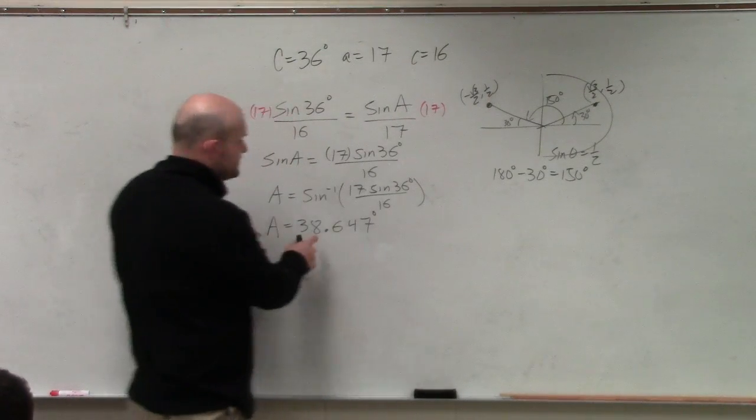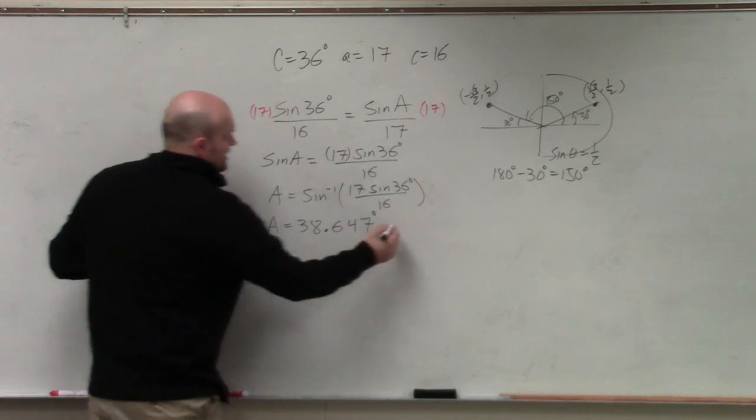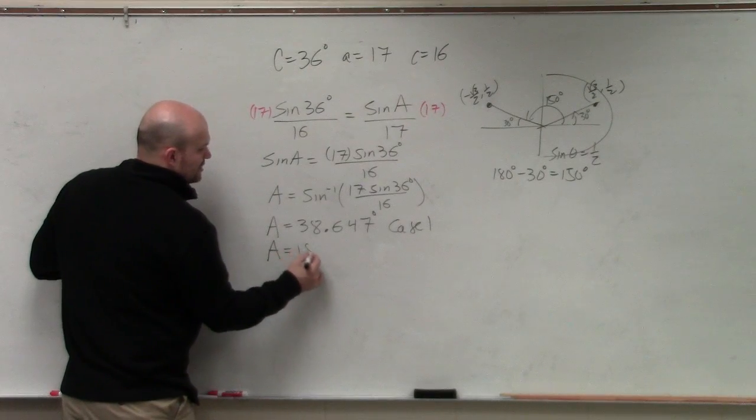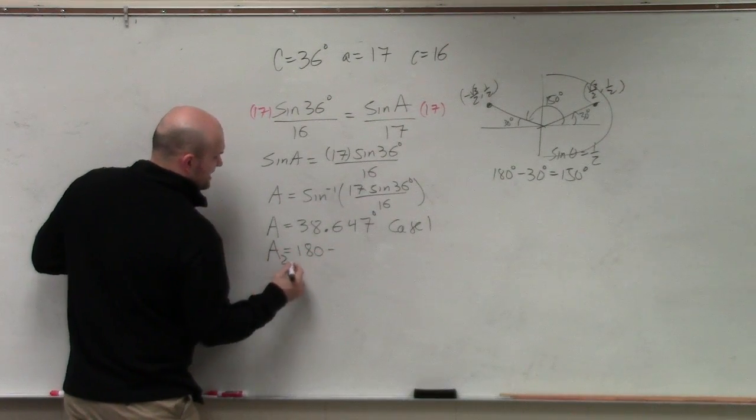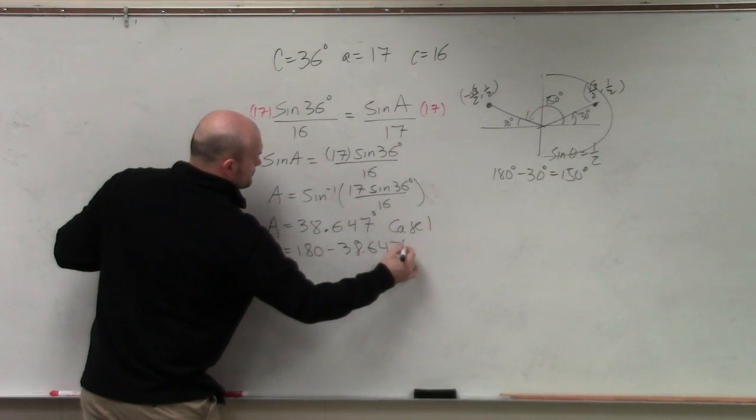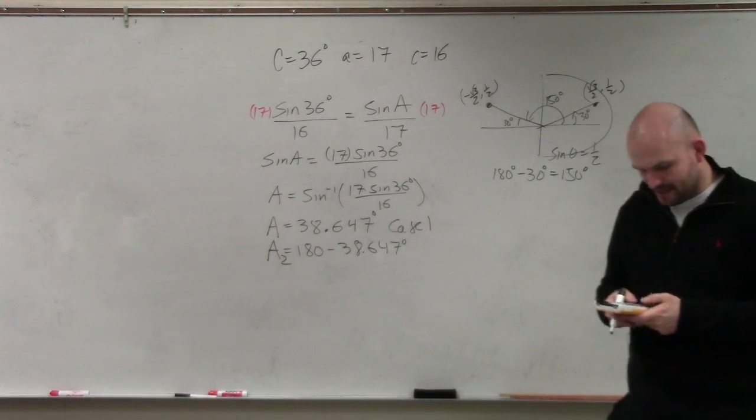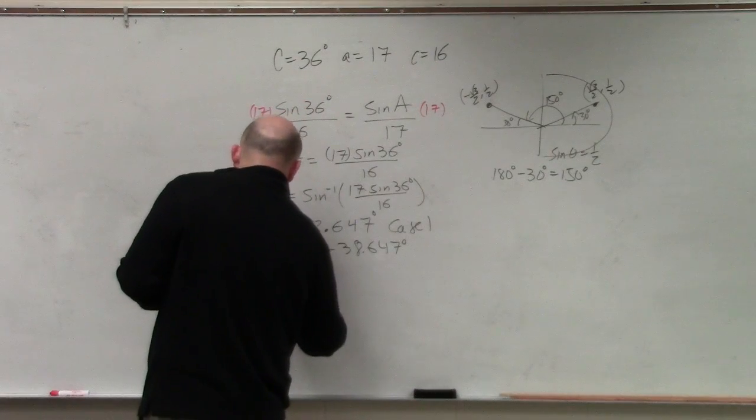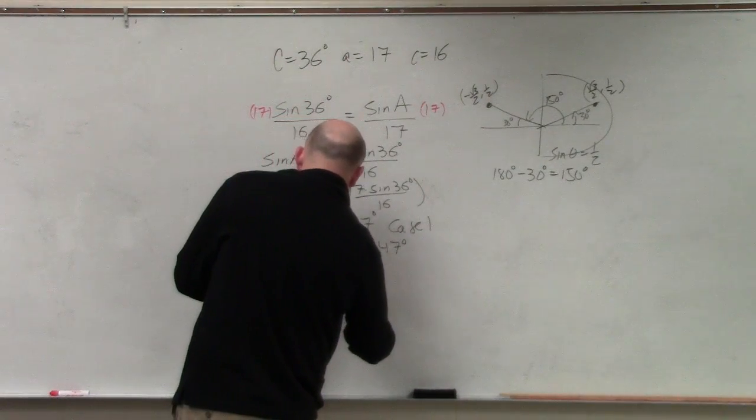So what we need to do to test our other angle, to find A2, so this would be our case one. To find if there's another A that it could be, you're just going to do 180 minus your angle. So I just do 180 minus my last answer, and I get A2 equals 141.353.